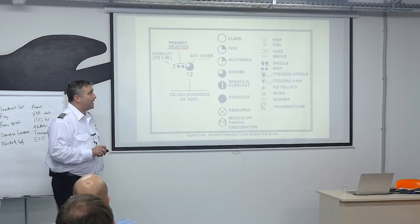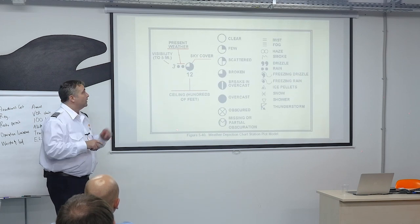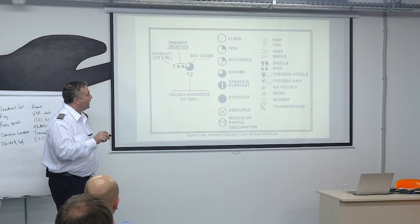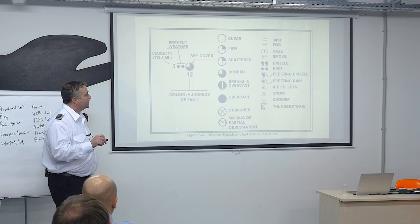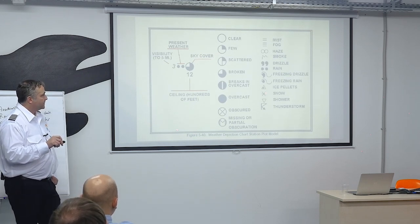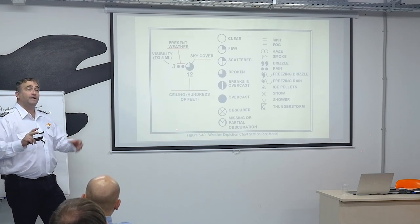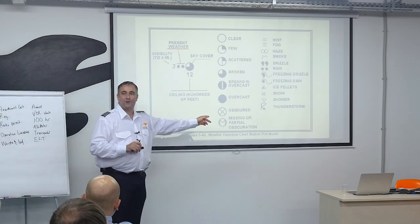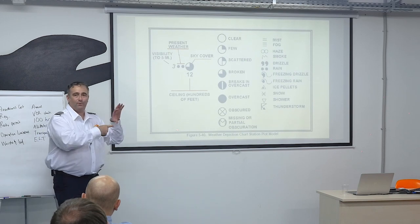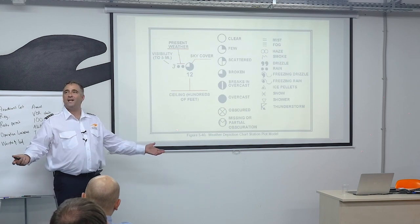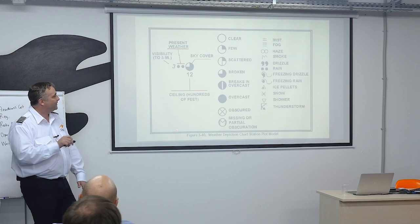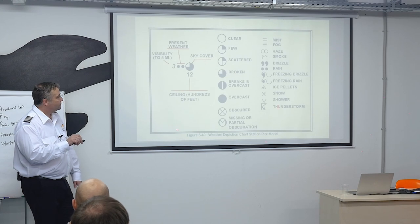Some station plot model symbols: mist is two lines, fog is three lines — thicker mist — haze looks like an infinity symbol, and smoke. Drizzle, rain, freezing drizzle — anything with that little sideways S over it is freezing. Ice pellets, snow. If it's a shower, it'll look like an ice cream cone. Thunderstorm symbol looks kind of like what it's supposed to be.